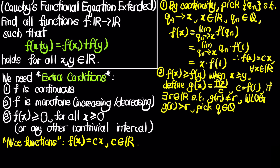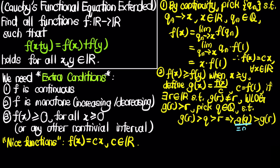By the density of the rationals, we can pick a rational q such that g(r) > q > r. Since g is increasing, g(q) > g(r). But since q is rational, g(q) = q. So we have q > g(r) from one side and g(r) > q from the other — a contradiction. Therefore g(r) = r for all real r, which means f(r) = cr.